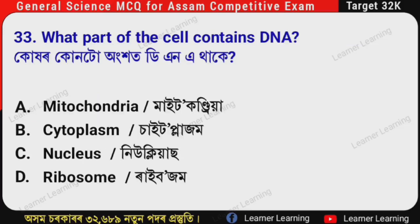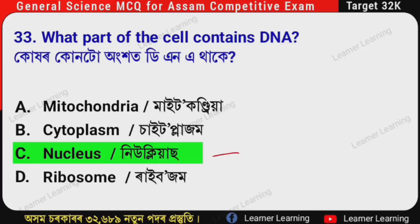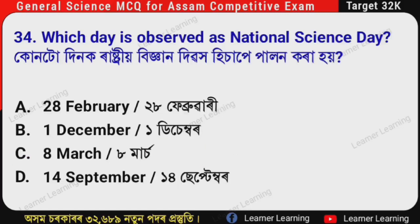Next question: What part of the cell contains DNA? (Assamese: Kokar konto angkot DNA tha ke?) The correct option is Option C — Nucleus. DNA is found in the nucleus of the cell.